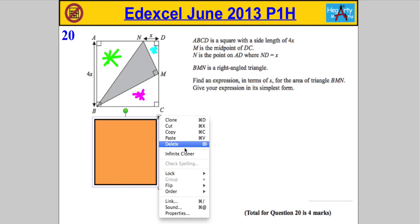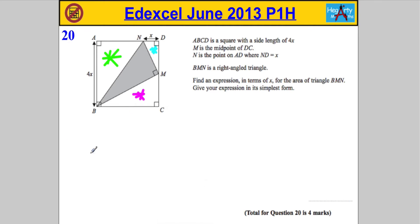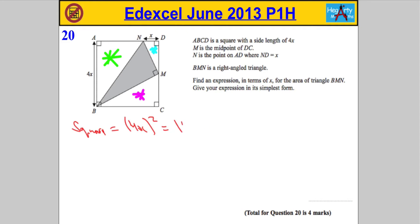First, let's get the area of the square. The area of the square is found by doing the length times the width, so we do 4x times 4x, or more simply 4x squared. 4x squared simplifies to 16x squared. So the area of our square is 16x².